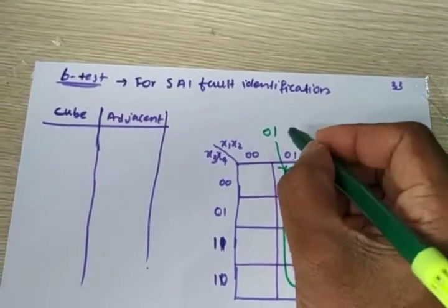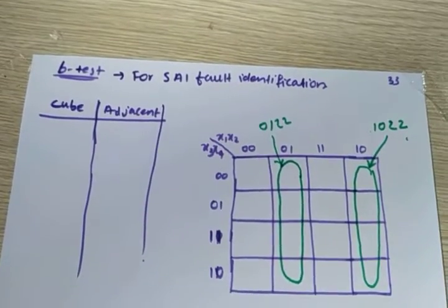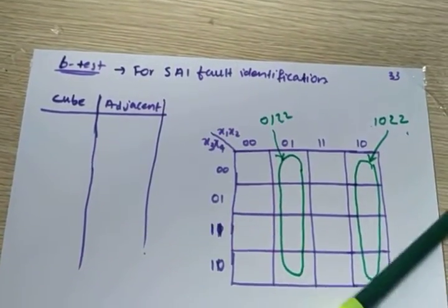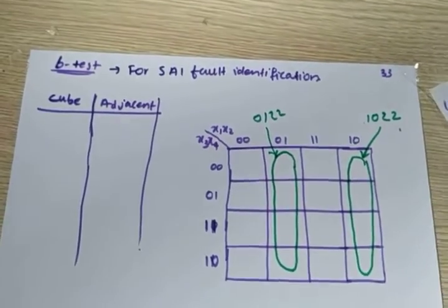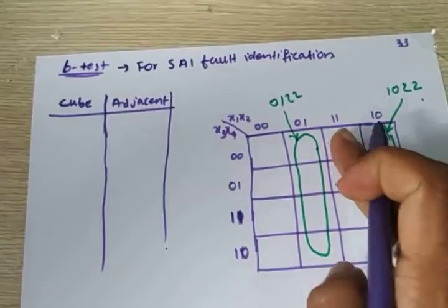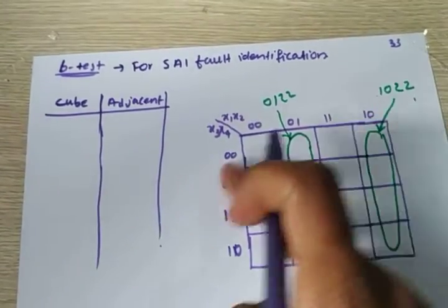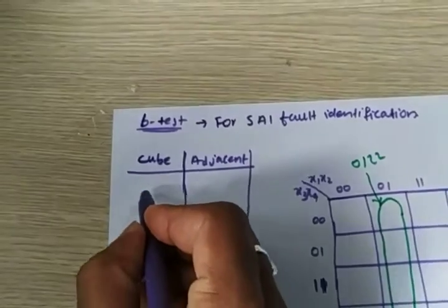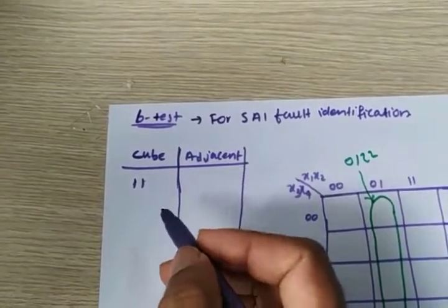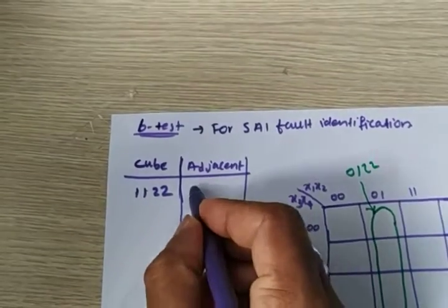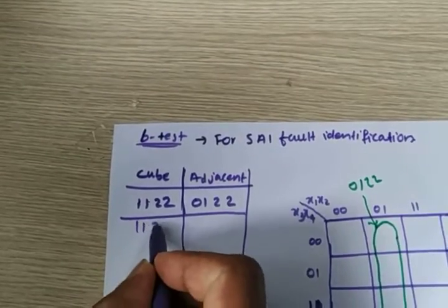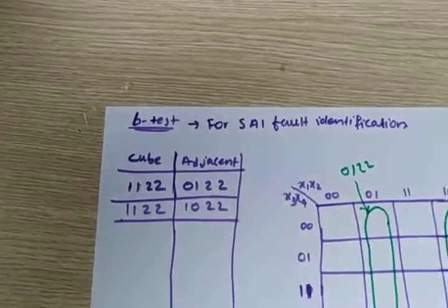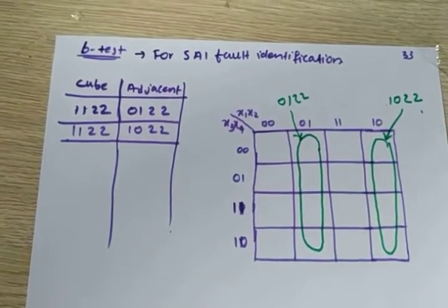So for this cube we have two adjacent cubes. Our original cube is 1·1·2·2, and the adjacent cubes are 0·1·2·2 and 1·0·2·2. These are the adjacent cubes. Now we need to find the next cube.